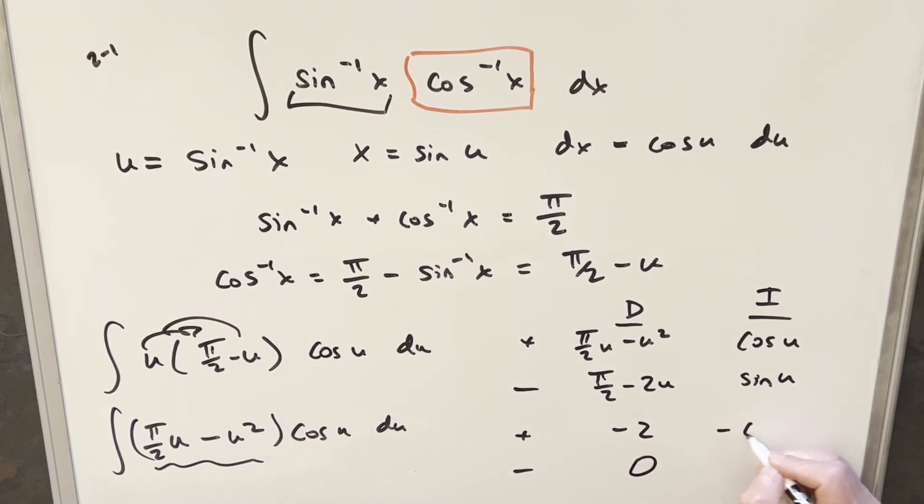I'll integrate sine u and we're going to have minus cosine of u. And then we'll integrate this and we're going to have minus sine of u.